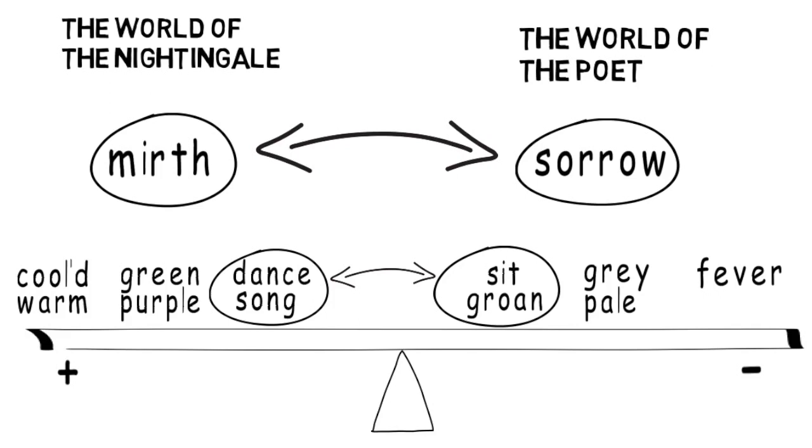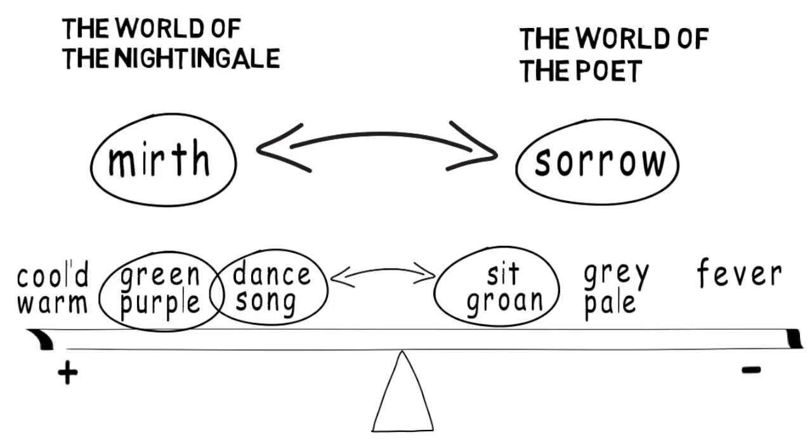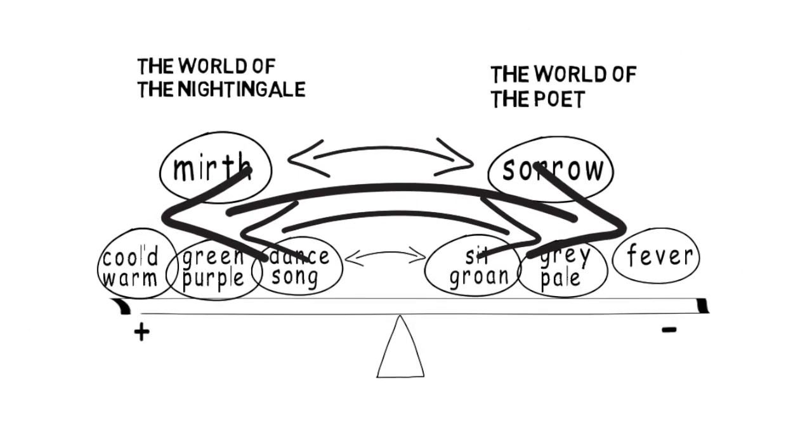Equally, the world of the Nightingale is a colorful world with its green and its purple and this again sits in specific contrast with the world of the poet which is grey and pale. As a final example, we could look at the temperatures in the two stanzas. In the world of the Nightingale, the wine is cooled. It's a beaker full of the warm south. Whereas in the world of the poet, we have the uncomfortable temperature, the fever. And again, I'm just scratching the surface here. You could find many other examples if you looked at those two stanzas carefully. So take a look for yourself and see what you can find.